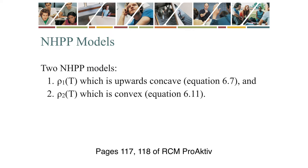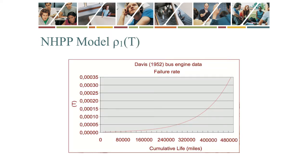There are two generally accepted NHPP models that we use to model repairable systems. They are Rho1(T), which bends upward with age, and Rho2(T), which flattens out with age. Here is an example of Rho1(T) applied to a very famous data set — the Davis bus engine data of 1952. The bus engine data was in 1952 used in an analysis during which totally wrong conclusions were reached, because it was analyzed using renewal theory. Repairable systems theory only followed later.